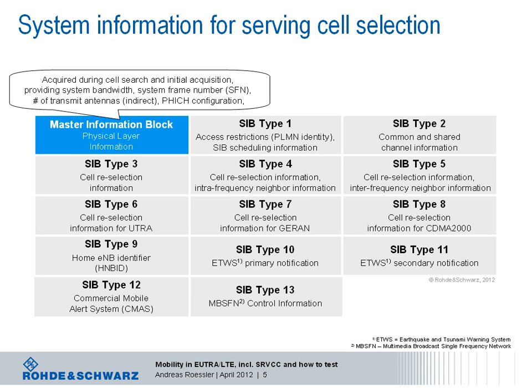Before we take a closer look at the initial cell selection and the cell reselection procedure, a quick look at how the network supports the mobility procedures with system information. System information in LTE is organized in so-called system information blocks. Just one of these blocks is provided on a dedicated channel — the MIB, short for Master Information Block, which is carried on the physical broadcast channel PBCH — and all other system information are provided using the shared channel principle.